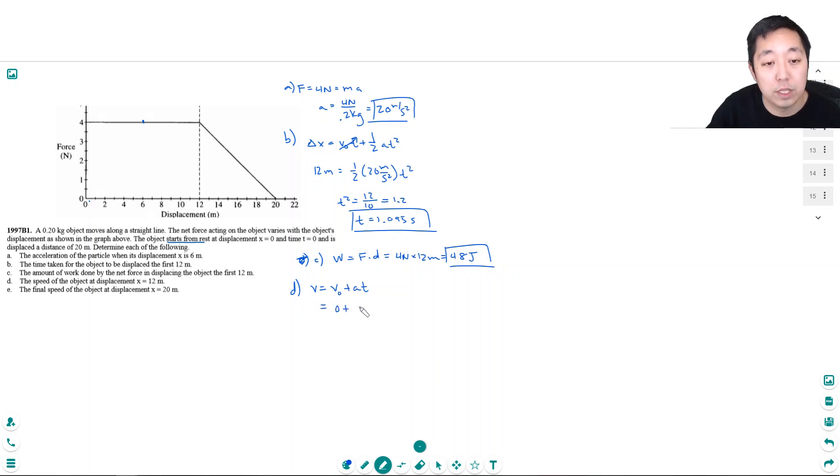Its initial velocity was zero. Its acceleration was 20 meters per second squared, and t was 1.095 seconds. So its final velocity would be 21.1 meters per second. Okay, that's one way to do the problem.